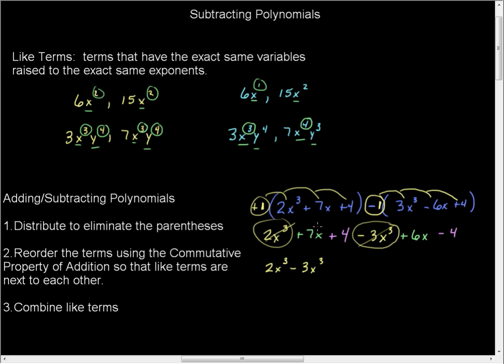And then I'm going to take this positive 7x and this positive 6x and it becomes +7x + 6x. And those are gone. And then I have a positive 4 in purple and a negative 4 in purple. So I have a +4 and a -4. And those are gone. So those are accounted for.